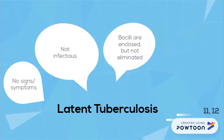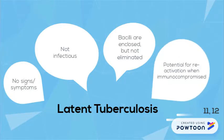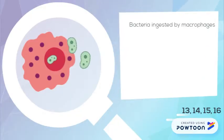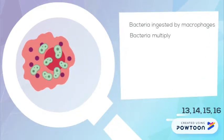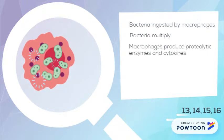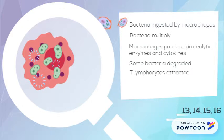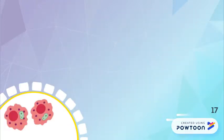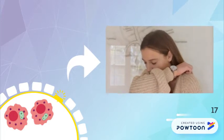The bacilli aren't eliminated, however, and the disease has the potential to be reactivated when the patient becomes immunocompromised. After being ingested by macrophages, bacteria multiply slowly. Macrophages produce proteolytic enzymes and cytokines to try to degrade the bacteria, which also attracts T lymphocytes. Macrophages present mycobacterial antigens on their surface to the T cells. The local inflammatory response often causes damage to the epithelium, exposing underlying sensory nerves to chemical and mechanical stimuli, which trigger the cough reflex.